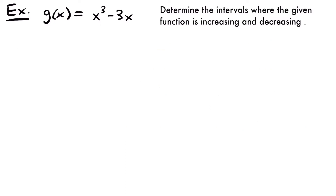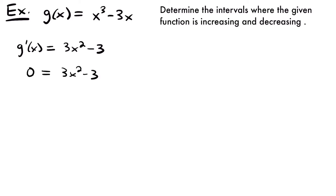Let's look at another example. We have g of x equals x cubed minus 3x, and we want to determine the intervals where the function is increasing and decreasing. Taking the derivative, g prime of x equals 3x squared minus 3, using the power rule. Setting this equal to 0: add 3 to both sides to get 3 equals 3x squared, divide both sides by 3 to get 1 equals x squared, and taking the square root gives x equals plus or minus 1. So we have two critical values: x equals negative 1 and x equals positive 1.